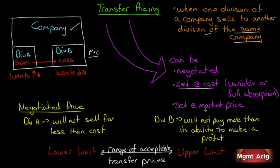Some companies set the transfer price at market price, especially if Division A is already selling its product in the marketplace. Since Division A is getting the full margin on external sales, it's going to want the same from Division B. The rationale for using market price is that there's already a price established in the market, so it makes sense to use that for Division B — and Division B is motivated to compete at the market rate.